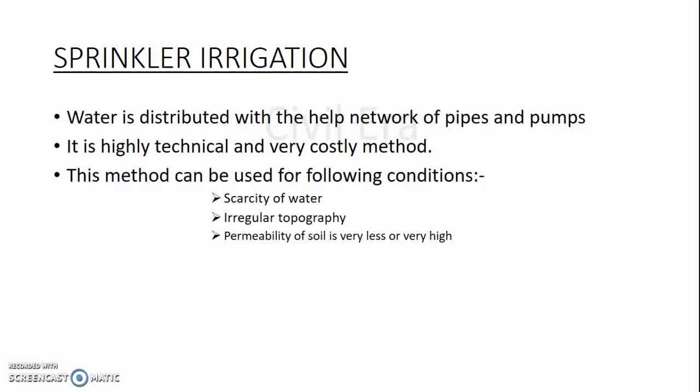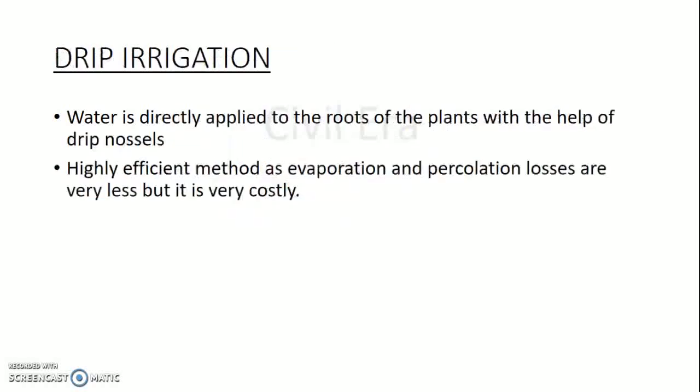The efficiency of water application and distribution is very high in sprinkler irrigation, so the evaporation and percolation chances are very less. The next method is drip irrigation. In this method water is directly applied to the roots of plants with the help of drip nozzles. It is a highly efficient method as evaporation and percolation losses are very less, but it is very costly.